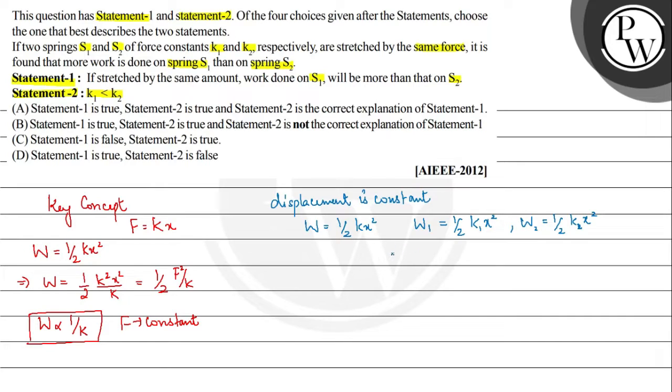So if we compare them, if we have written in the first statement that work done on first will be greater than work done on the second, so according to this, we have K1 should be greater than K2.